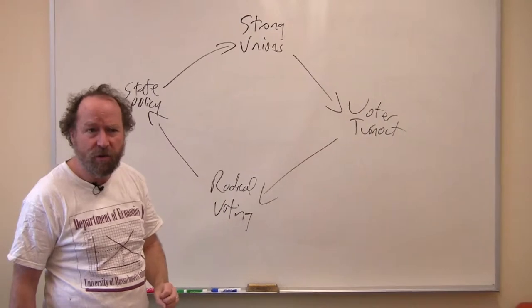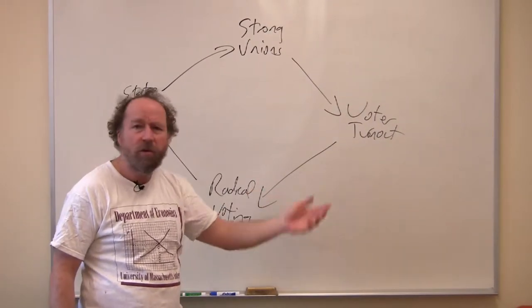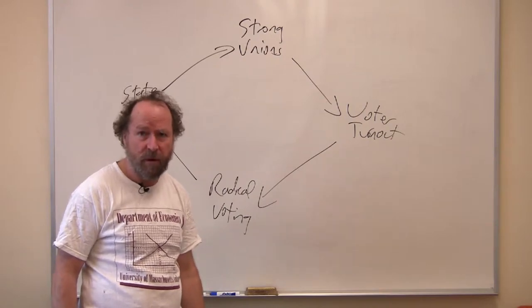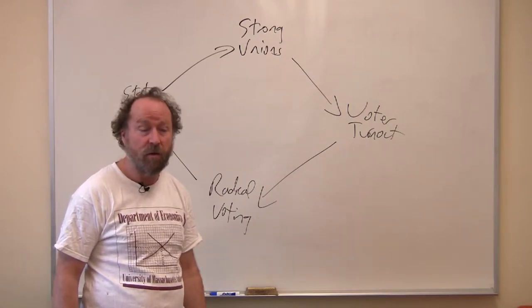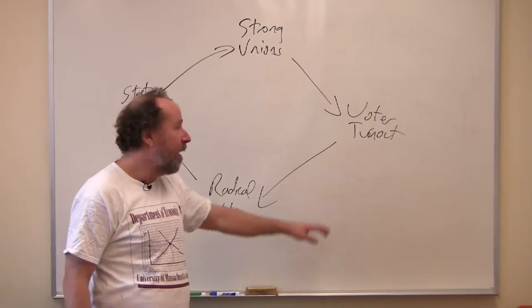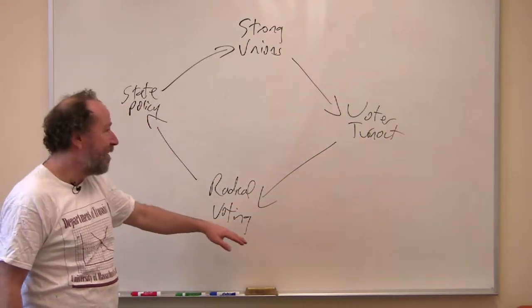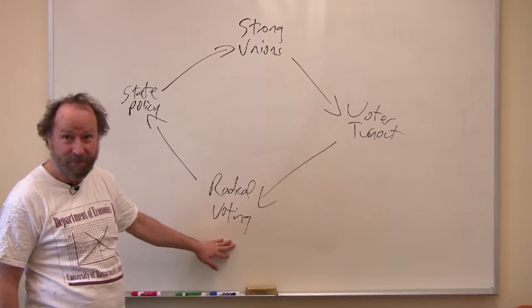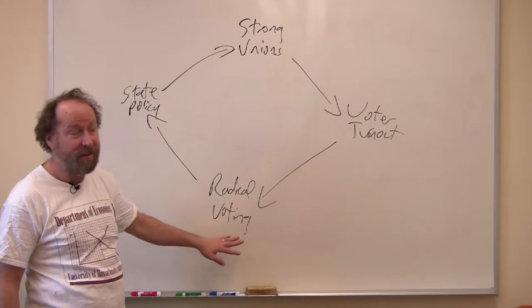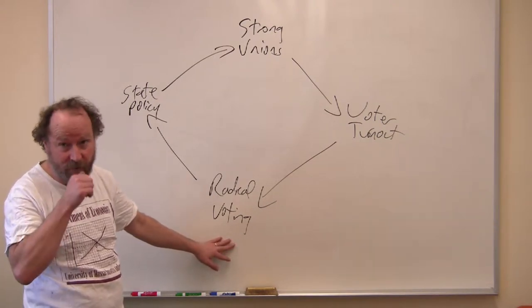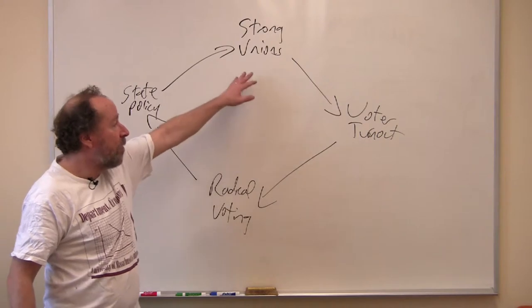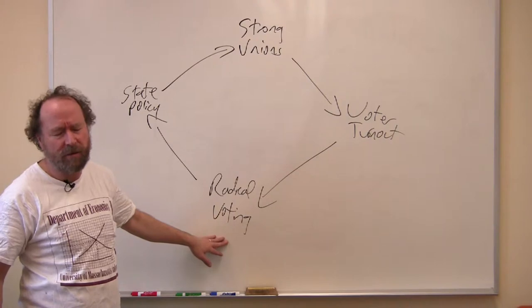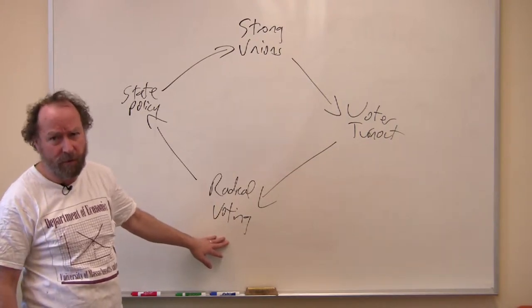Strong unions promote higher voter turnout. I showed that in Massachusetts in the 1880s. It has been shown consistently throughout 20th century American political history. Unionized workers are more likely to take part in elections. I show for Massachusetts that unionized workers are also more likely to vote for radical third parties where they get a chance. This is certainly true in Massachusetts in the 1880s. It has a very strong effect. Unionized workers, high turnout voters, they're the ones who vote socialist or vote in Massachusetts and the elections I'm talking about for the Union Labor Party.